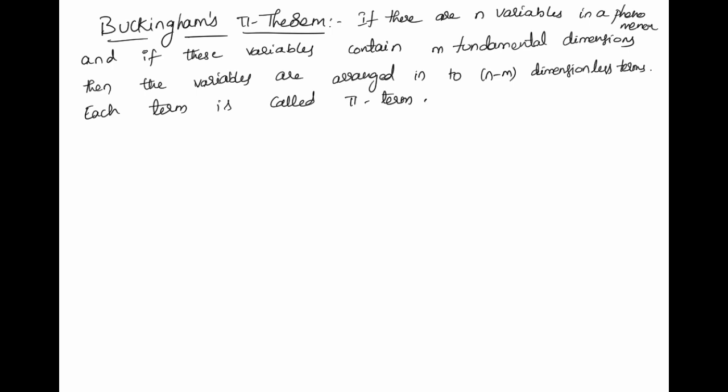For example, suppose we have 4 variables and 3 fundamental quantities — M, L, T. Then the number of dimensionless terms is n minus m, which is 4 minus 3 equals 1. So there is one dimensionless term, and that dimensionless term is called the pi term. In Buckingham's Pi Theorem we mainly work with these pi terms.